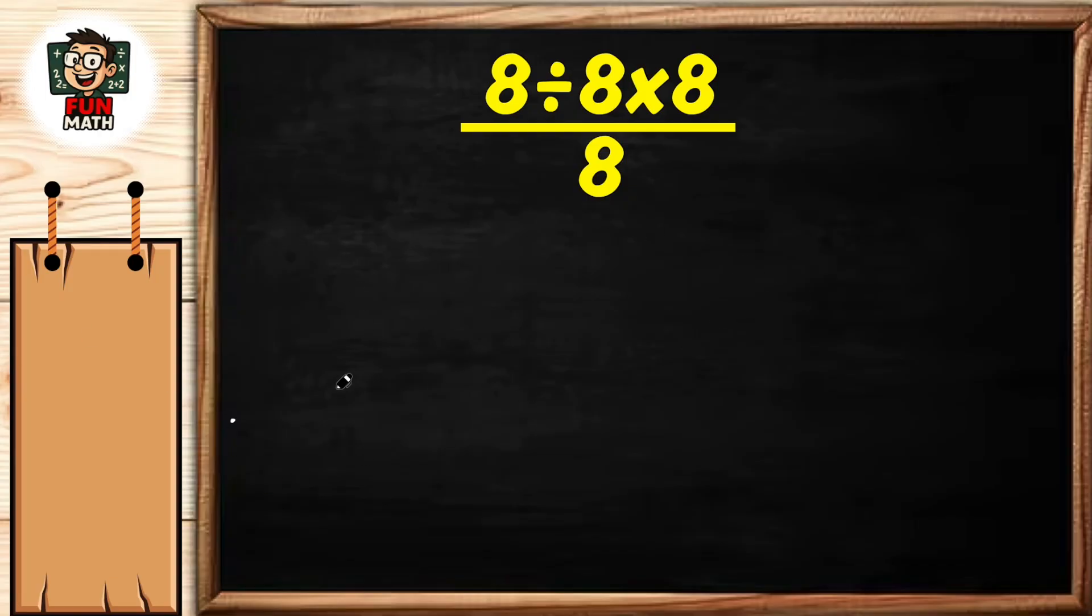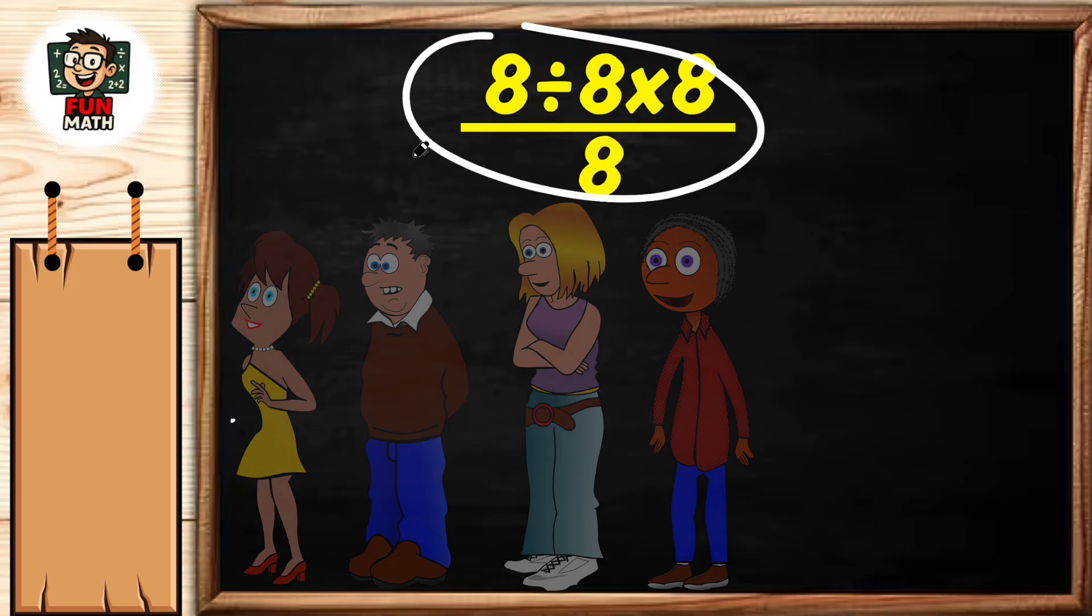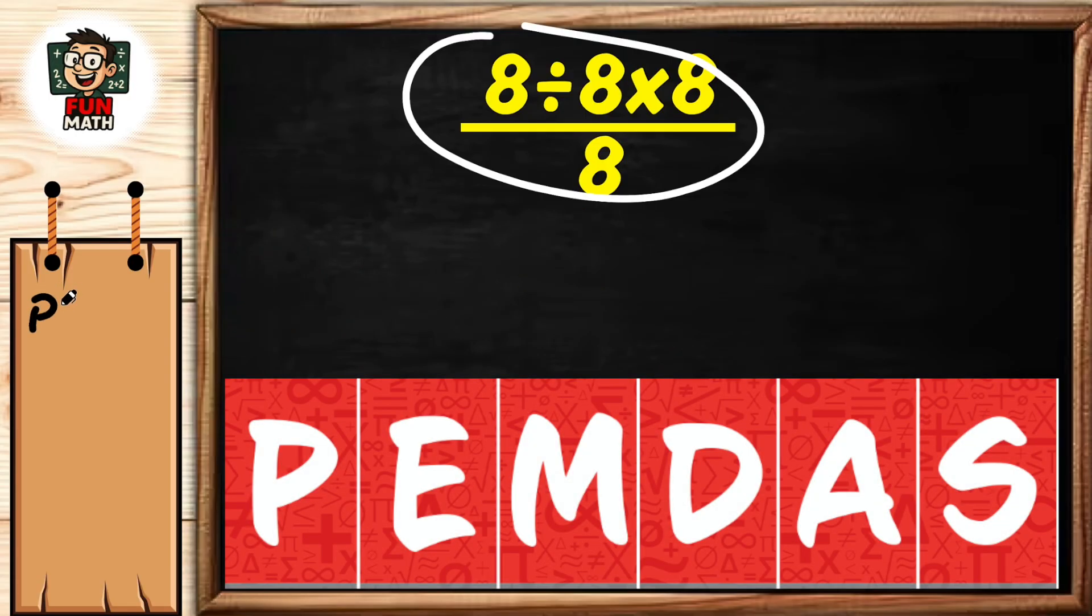When solving complex operations like this, we must pay attention to order of operations to avoid errors. We call the order of operations PEMDAS: P stands for parentheses, E stands for exponents, M stands for multiplication, D stands for division, A stands for addition, S stands for subtraction.